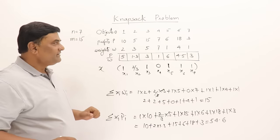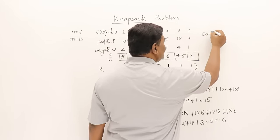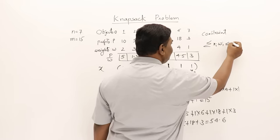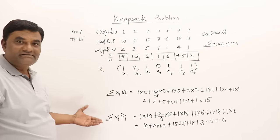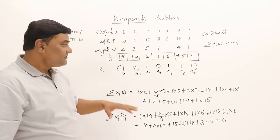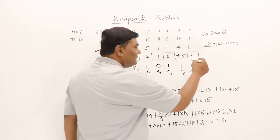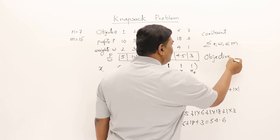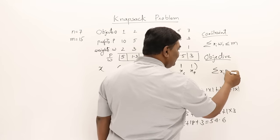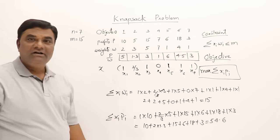To recap: the constraint is that the sum of weights of objects included in the bag must be less than or equal to the bag capacity of 15 — which is satisfied. The objective is that the sum of profits of included objects should be maximum. We have achieved both the constraint and the objective.